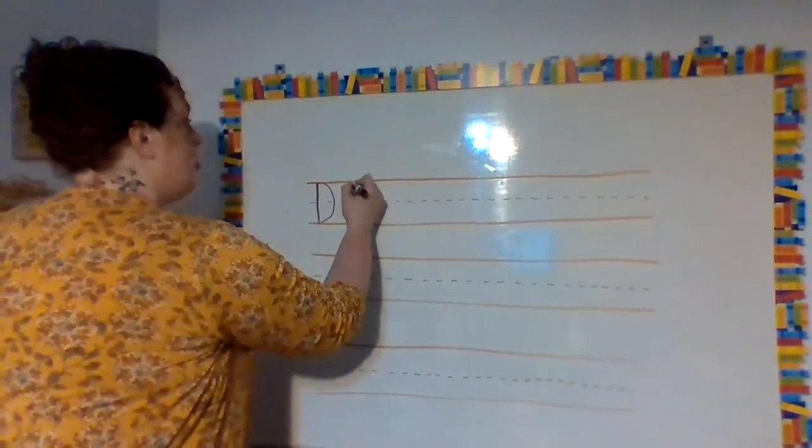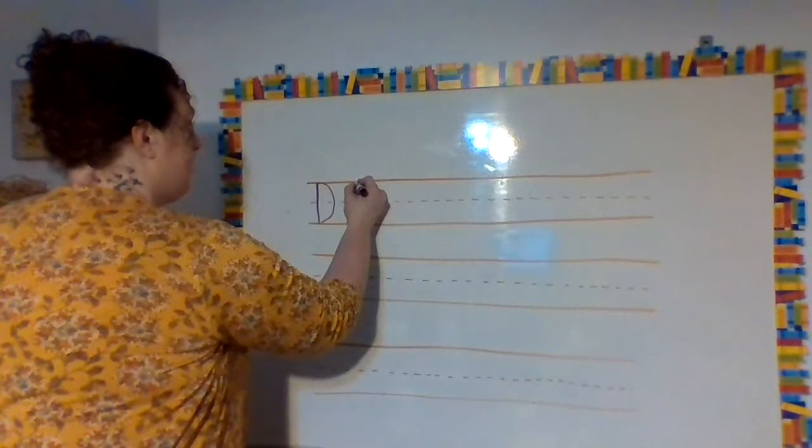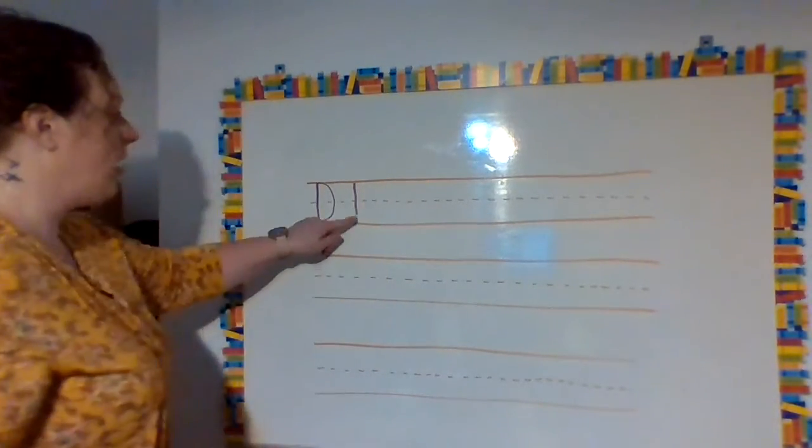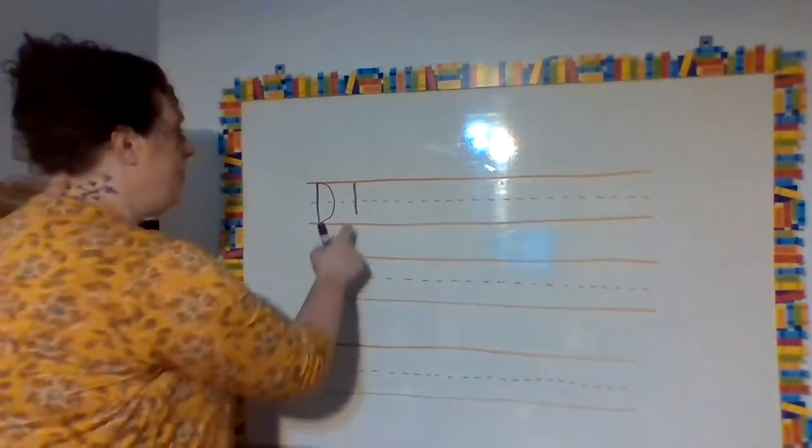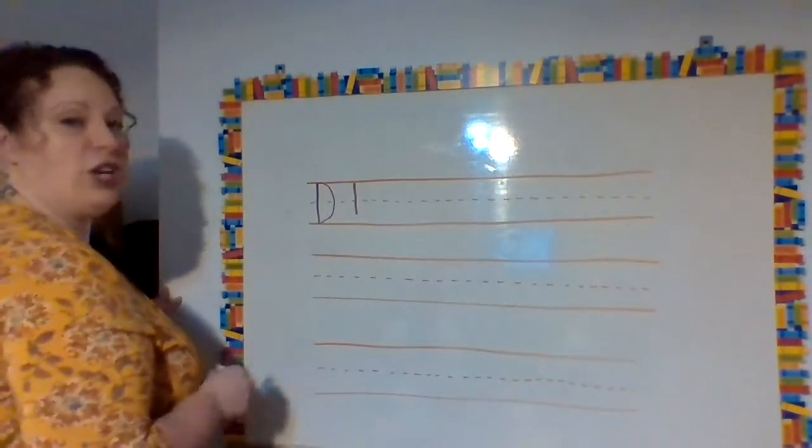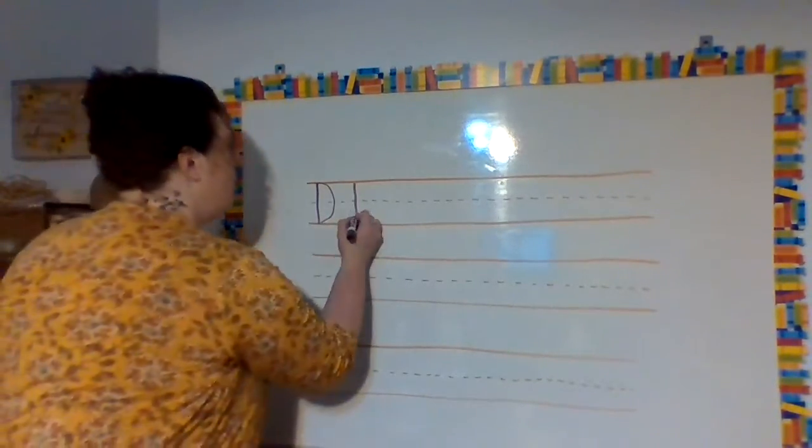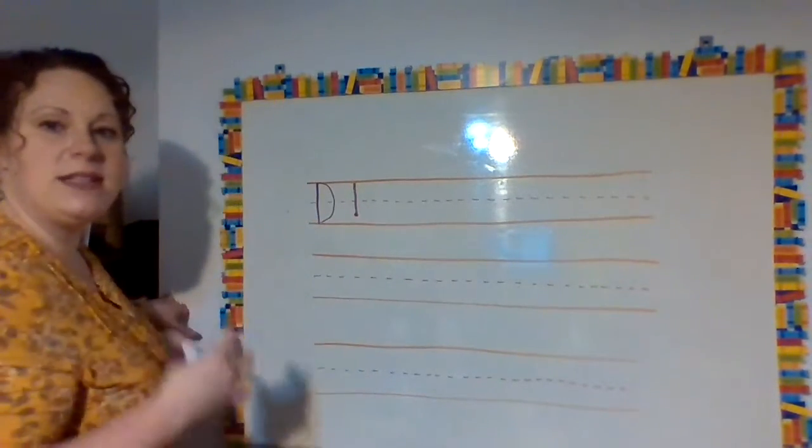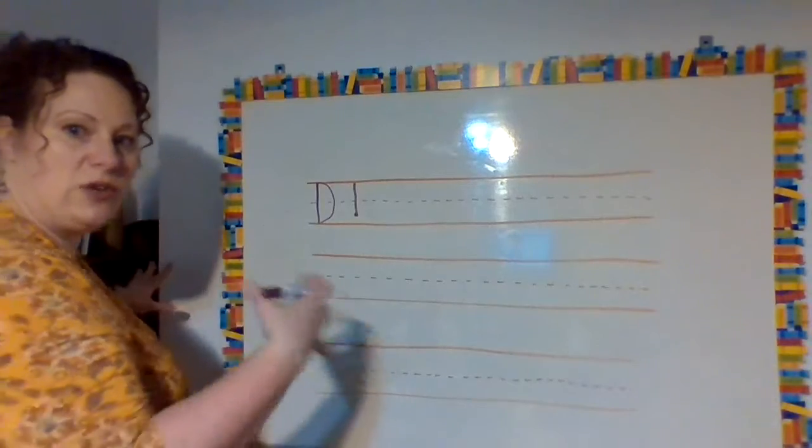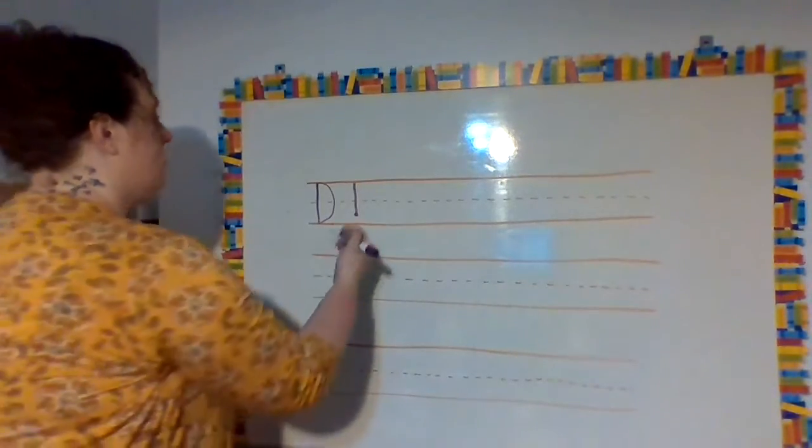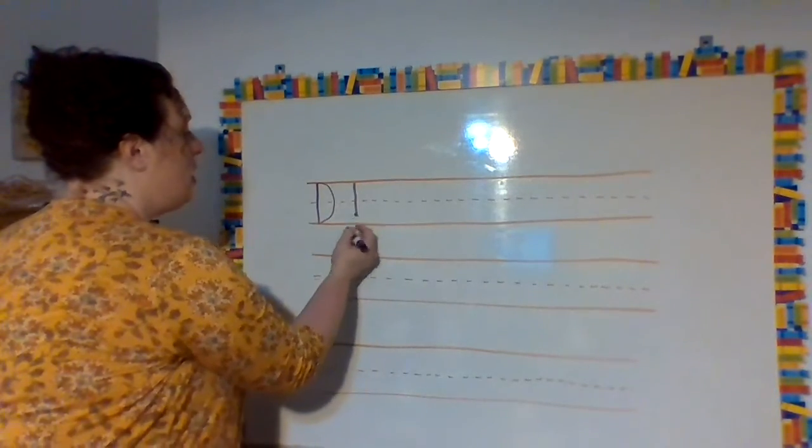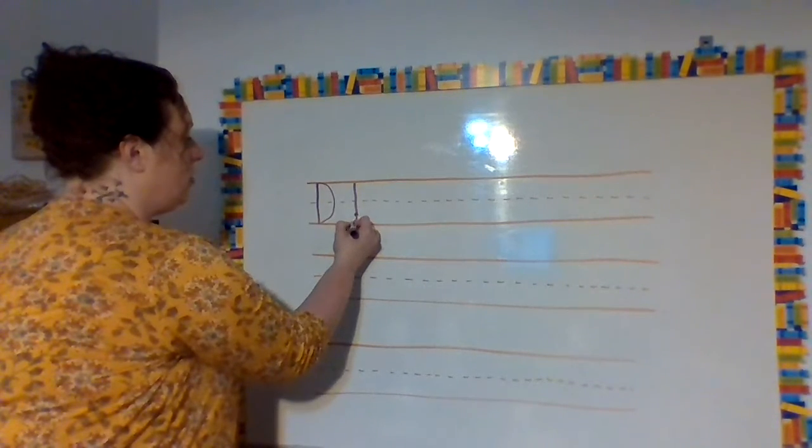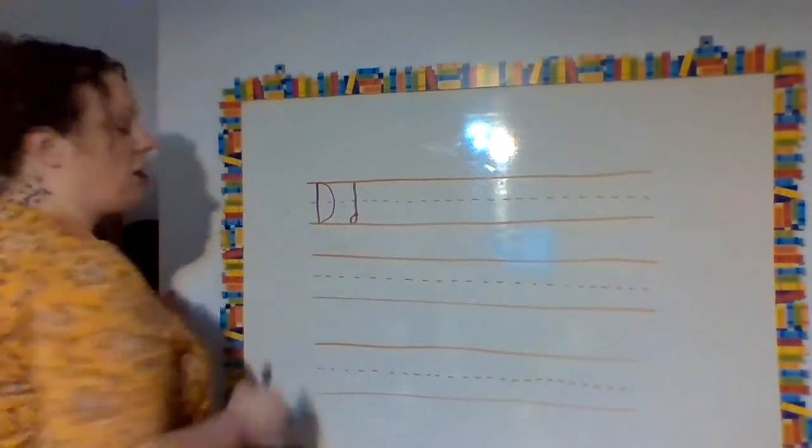So you're going to start up here at your top line and you're going to come down and right before, and I'm going to teach you a little trick, right before you get to that bottom line, you're going to change the line. So I'm going to put a dot here. OK, and I'm doing this a little bit bigger just till you get the hang of it and then we'll make the movements a little bit smaller. So you're going to come back to this dot. You're going to come down, touch the line, loop it around and come back to that dot.